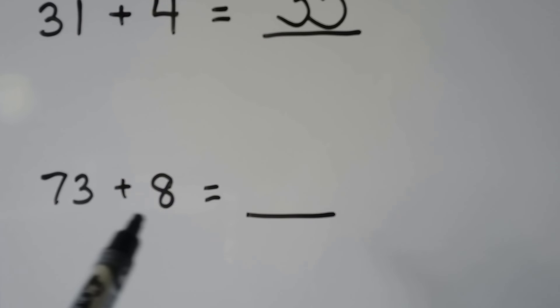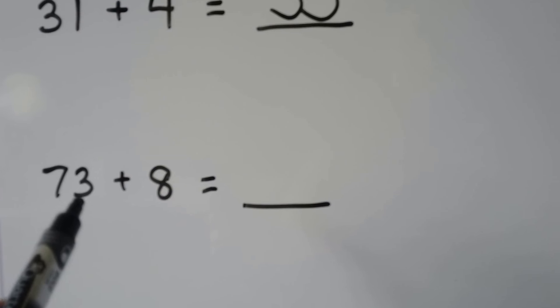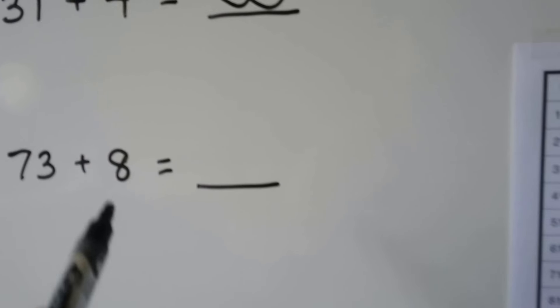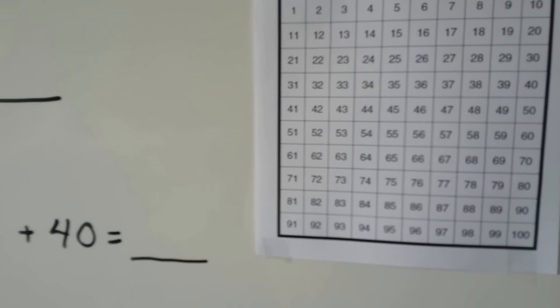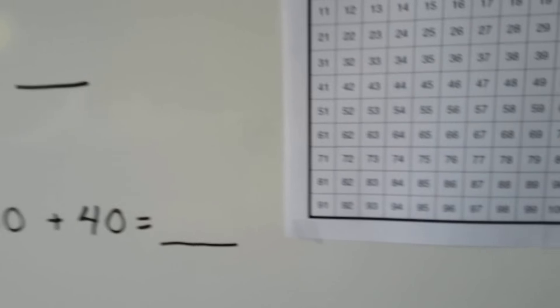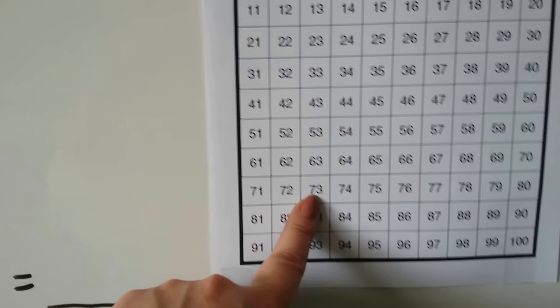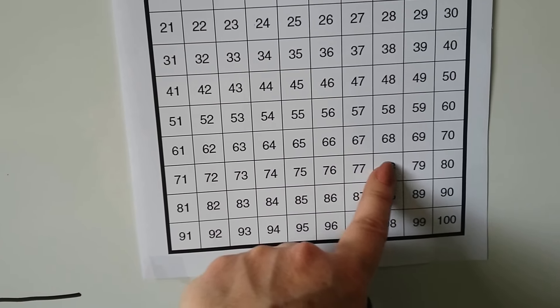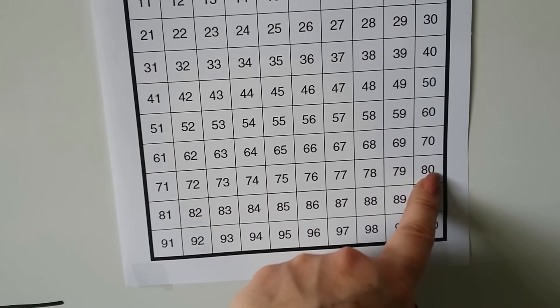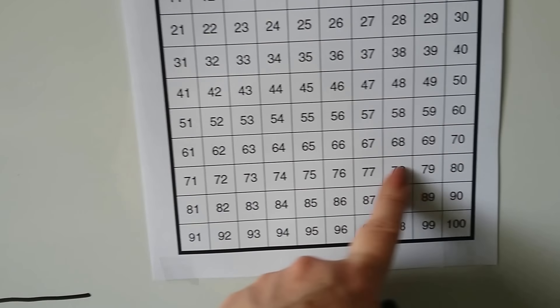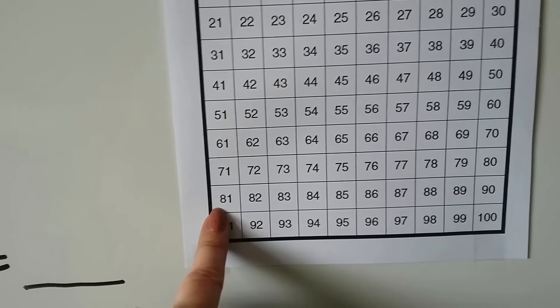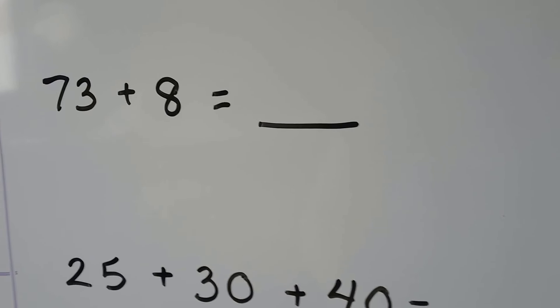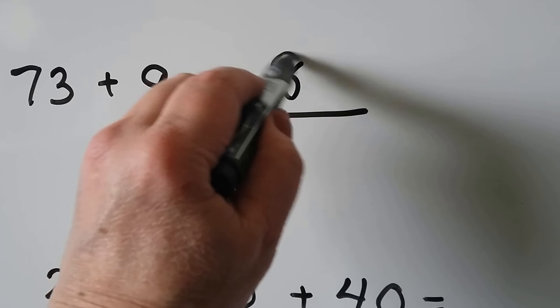73 plus 8. We start at the 73. We're adding ones. So we're going to go across the row. We find 73 and we add 8. Here's 73. We have to do 8 hops. 1, 2, 3, 4, 5, 6, 7. Now we have to go to the next row for 8. We're at 81. 73 plus 8 is equal to 81.